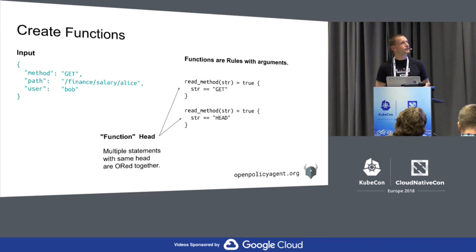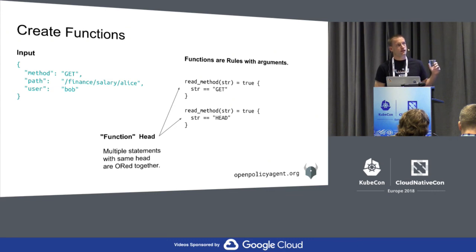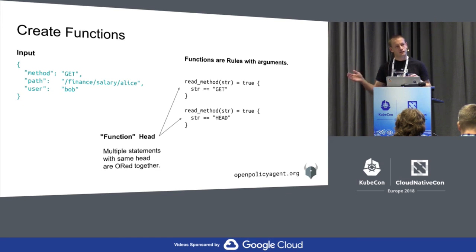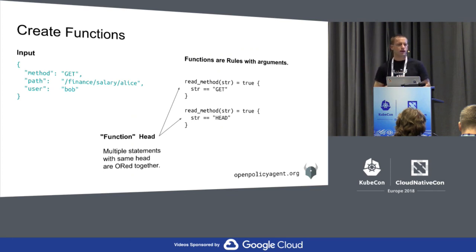Is there an easy way to share common functions across different OPA deployments? OPA does allow you to create multiple policies, and you can import one policy from another just like you would in Python or any programming language. That would allow you to share a common function across multiple policies. In terms of sharing across multiple OPA deployments, you would have to replicate the policies there.